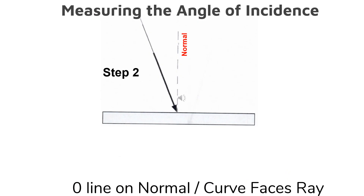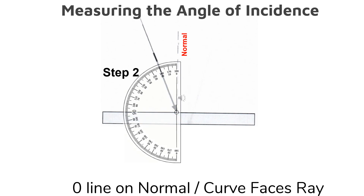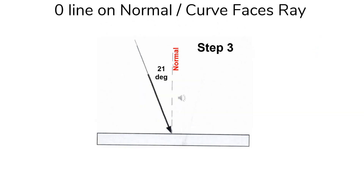When we measure the angle of incidence, we place the protractor's zero line on the normal, place the middle of the protractor where the ray hits the surface, and point the curve toward the ray. The first angle, or the angle of incidence, is 21 degrees. Since the angle of incidence is 21 degrees, the angle of reflection is also 21 degrees.